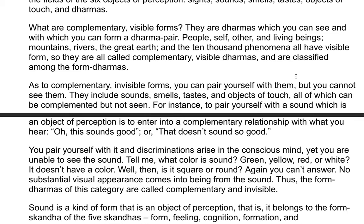They are all called complementary visible dharmas and are classified among the form dharmas. As to complementary invisible forms, you can pair yourself with them but you cannot see them. They include sounds, smells, tastes, and objects of touch — all of which can be complemented but not seen. For instance, to pair yourself with a sound which is an object of perception is to enter into a complementary relationship with what you hear. Yet you are unable to see the sound.